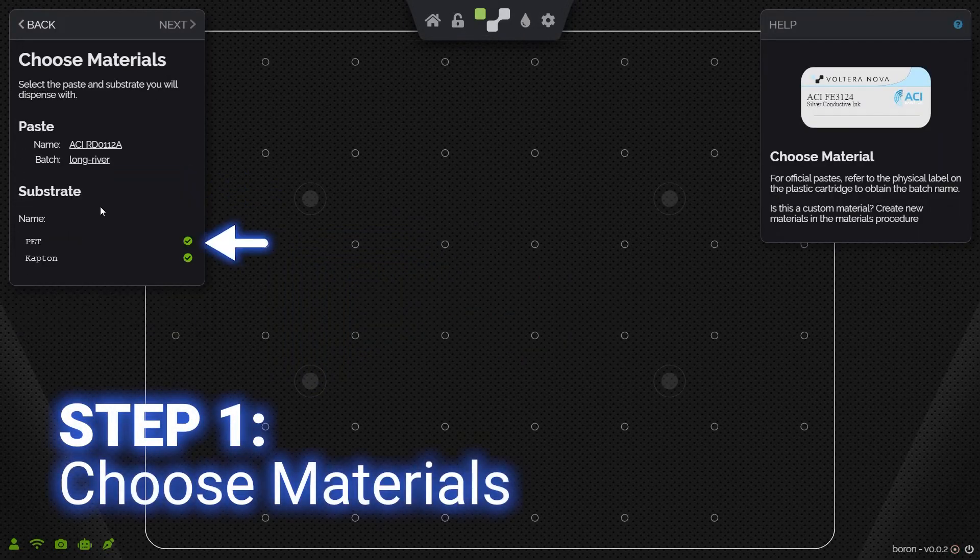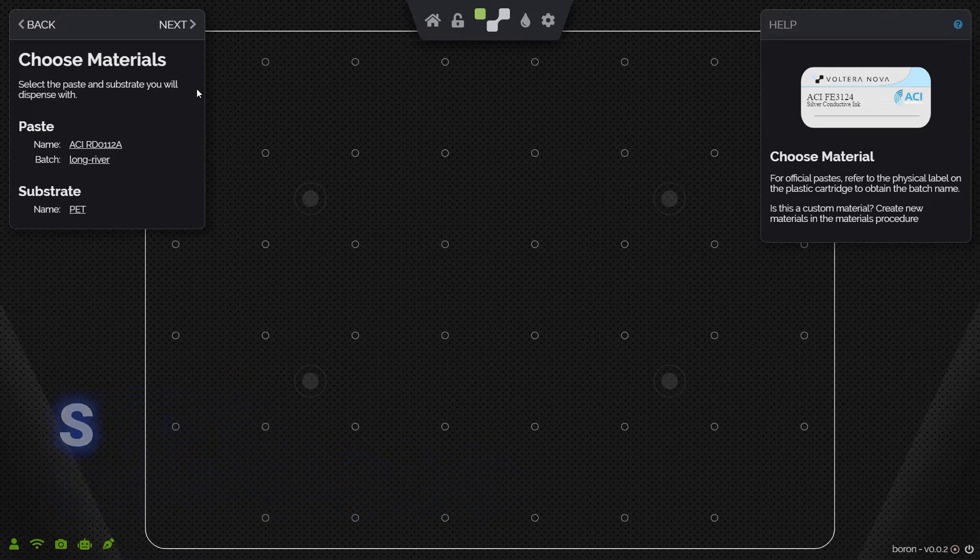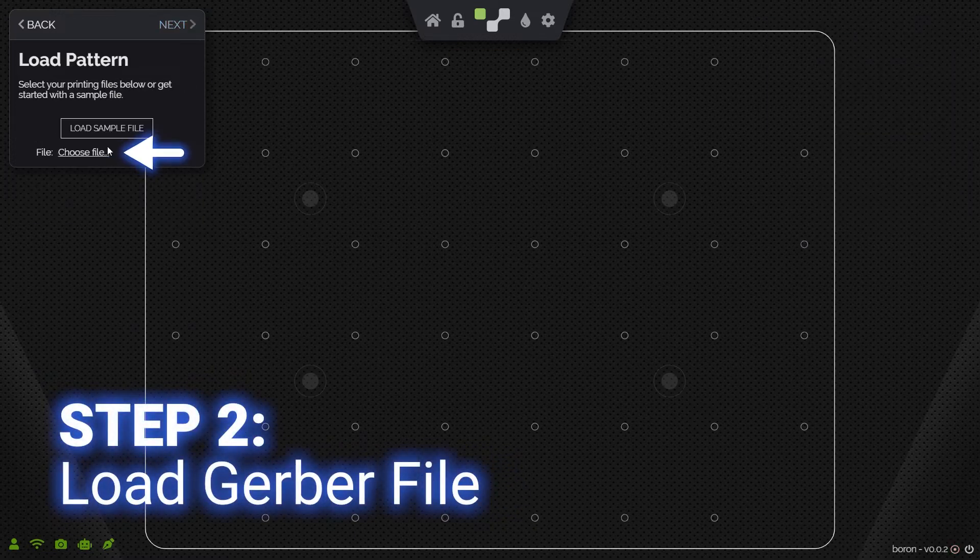First, we choose our materials. Then, we load a Gerber file and NOVA generates the toolpaths.